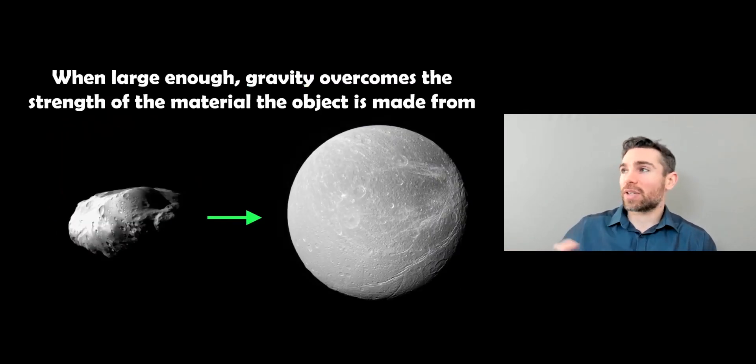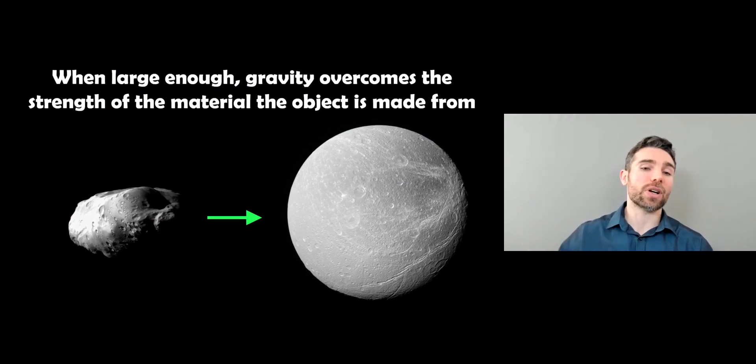So when they get large enough, that gravitational force will overcome the strength of the material that it's actually made of and it will become spherical or round. So it happens at a certain size and it depends on what the material is actually made of. So it will go from more like a potato shape here to a more spherical shape once it gets to a large enough size that gravity can overcome that.